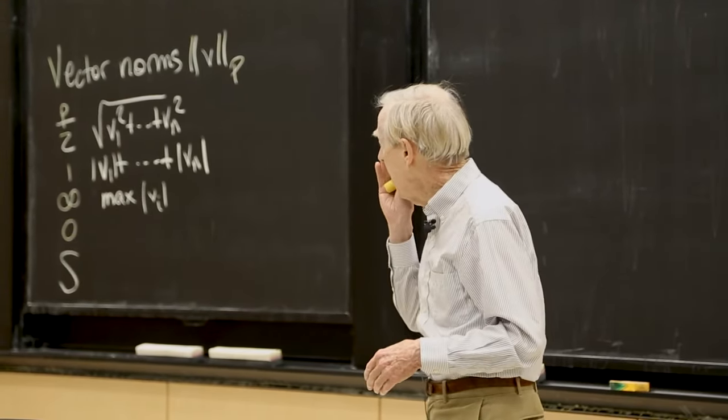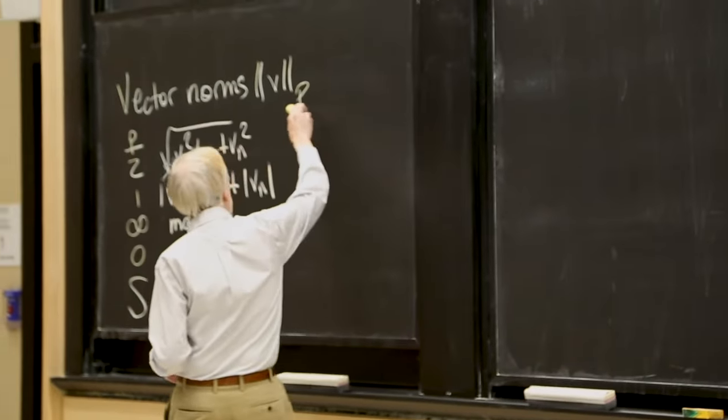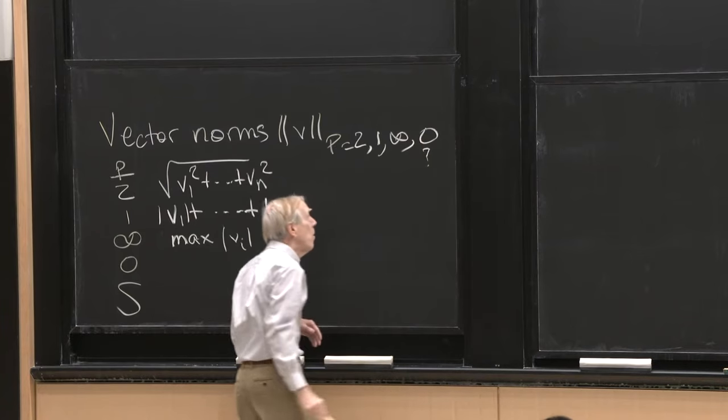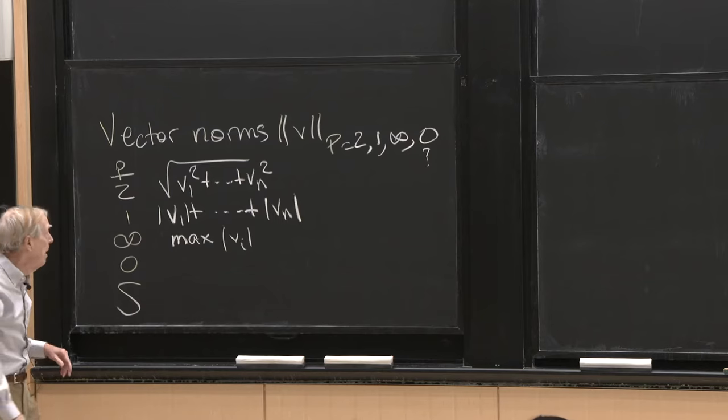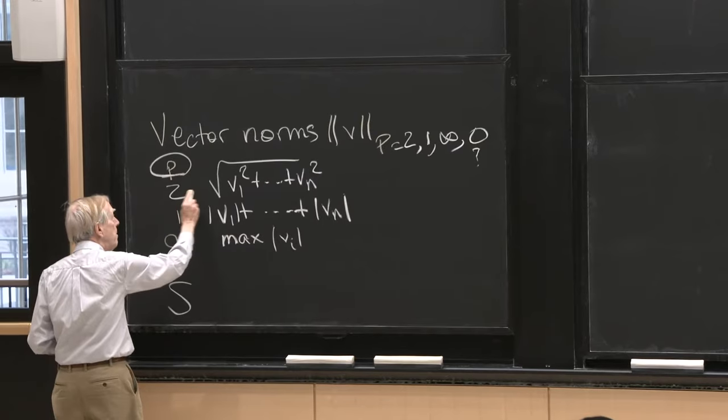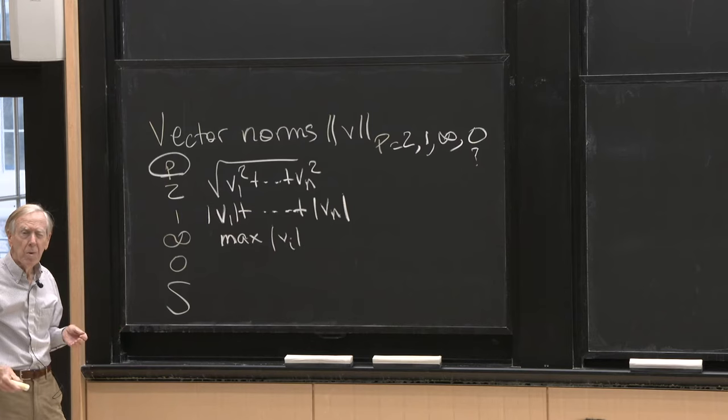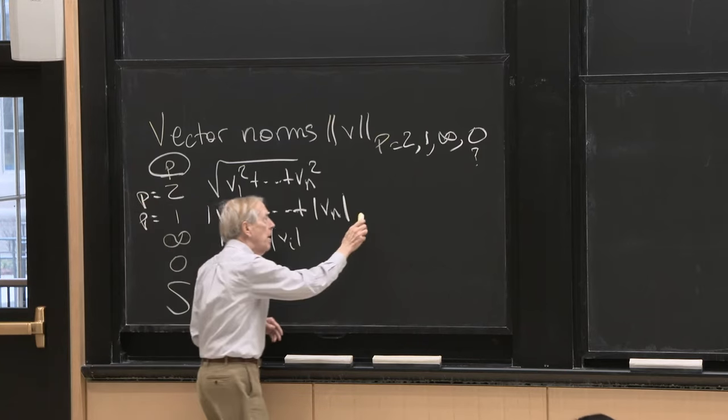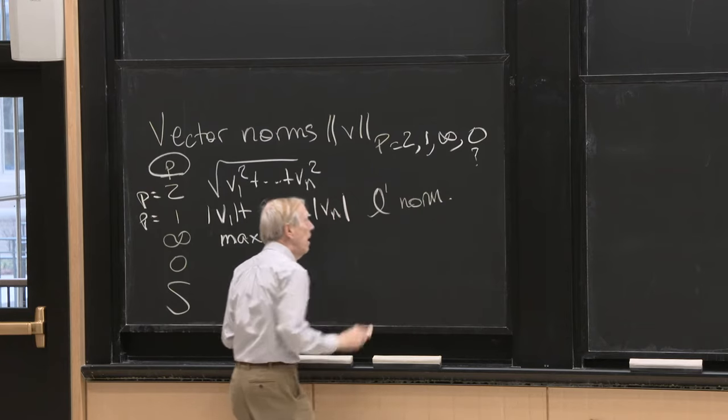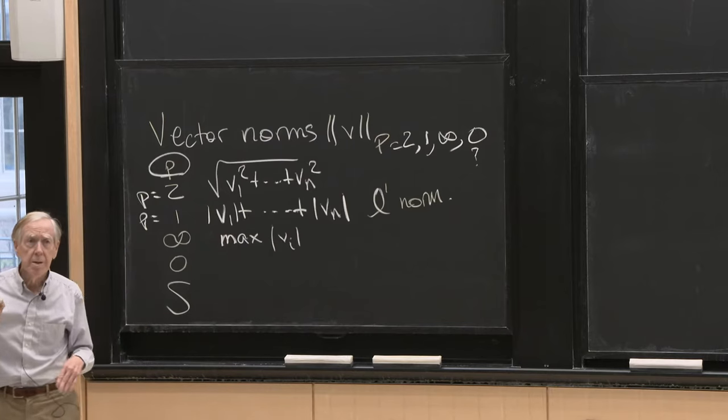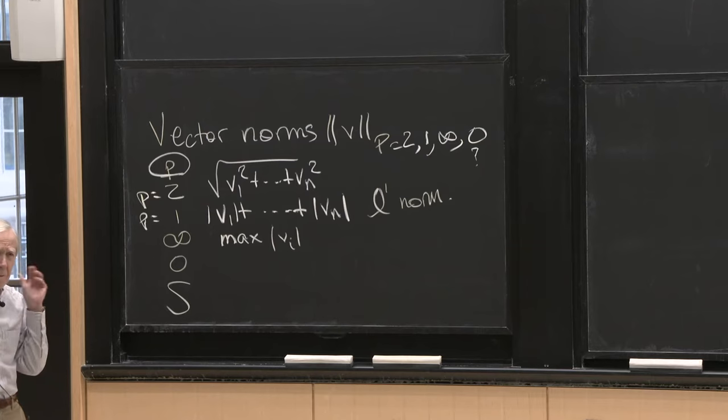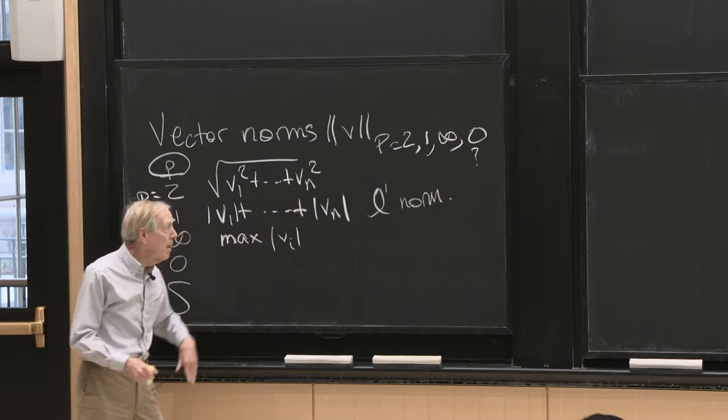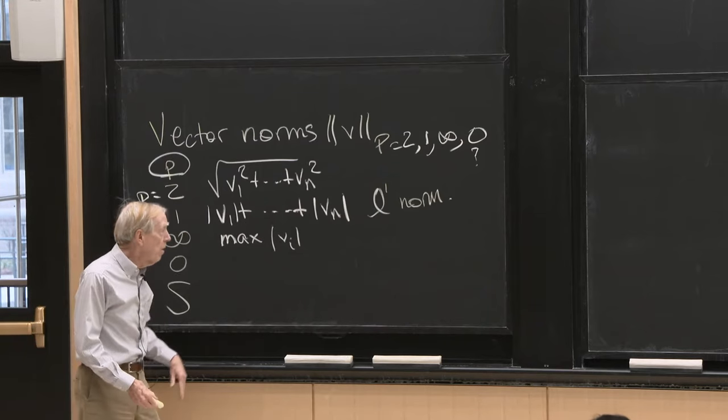But so yesterday, or Wednesday, I told you the p equals 2, 1, actually infinity. And then I'm going to put in the 0 norm with a question mark, because you'll see that it has a problem. But let me just recall from last time. So these are the p equal to 2 is the usual sum of squares, square root, usual length of a vector. p equal 1 is this very important norm. So I would call that the L1 norm. And we'll see a lot of that. I mentioned that it plays a very significant part now in compressed sensing. It really was a bombshell in signal processing to discover, and in other fields too, to discover that some things really work best in the L1 norm. The maximum norm has a natural part to play.